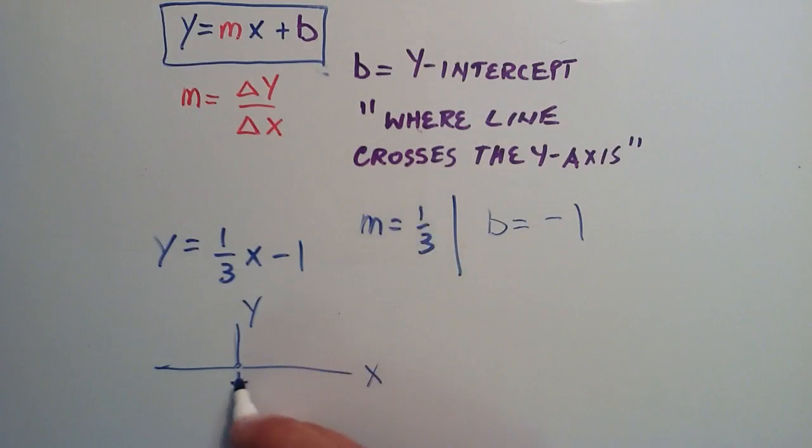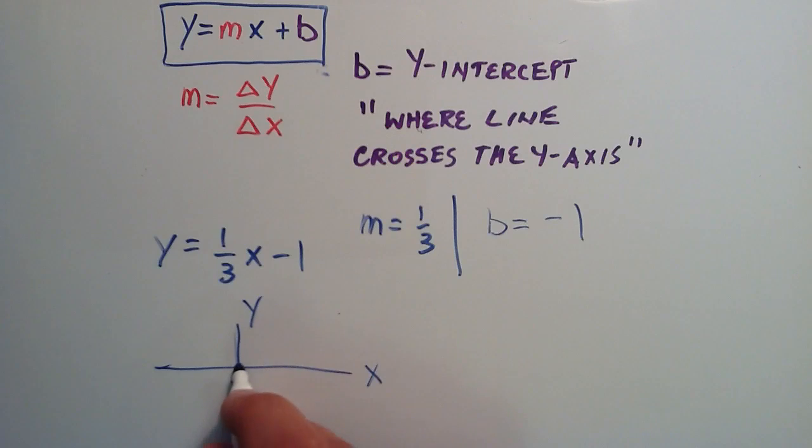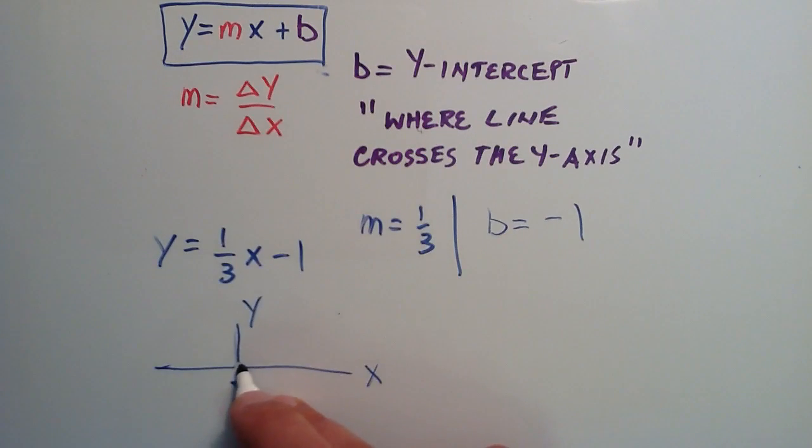So the change in y is one. So from the point on the line that we found on the y-axis, we go up one unit. We change one unit in the y, and every time we do that, we change three units in the x. So we go over one, two, three in the x, and we put another point there.